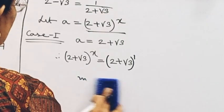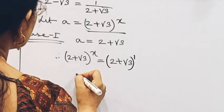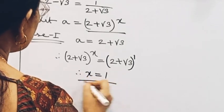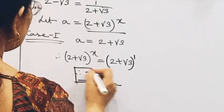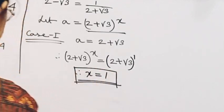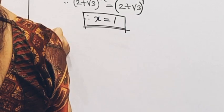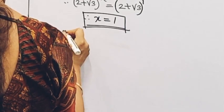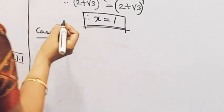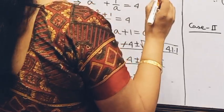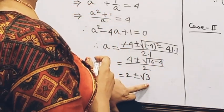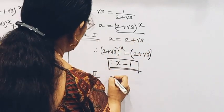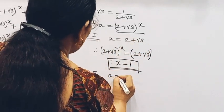Therefore x equals 1. Case 2: (2 - √3) to the power n. We write a to the power n equals 2 minus √3.